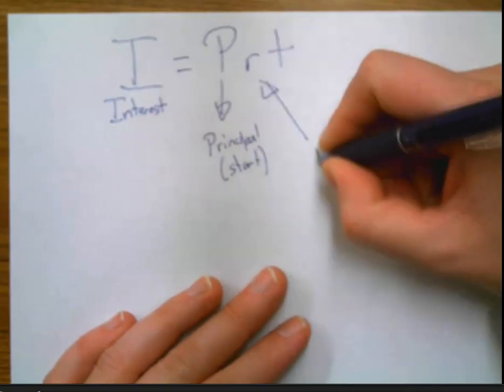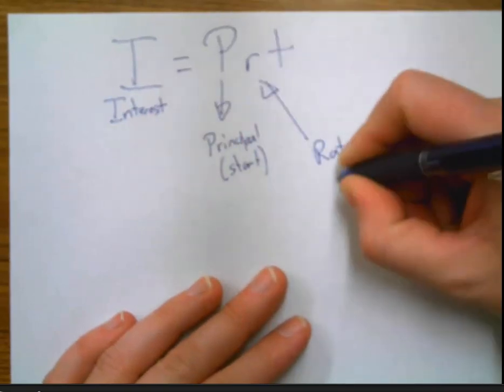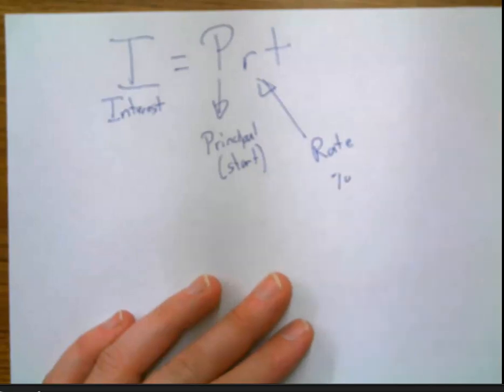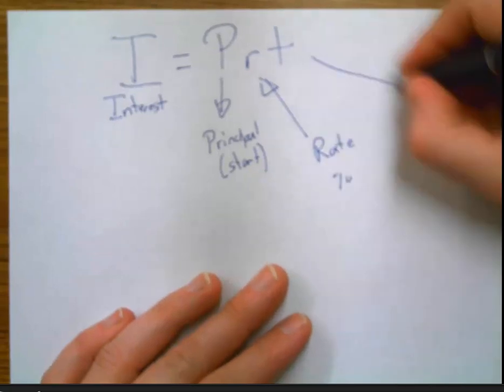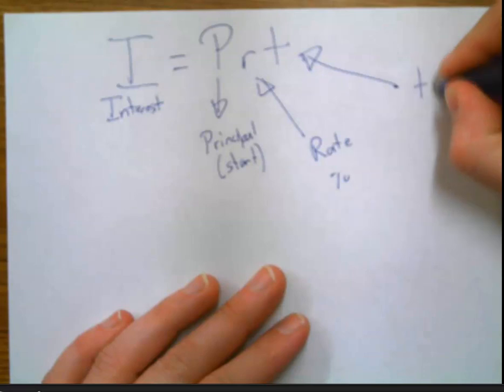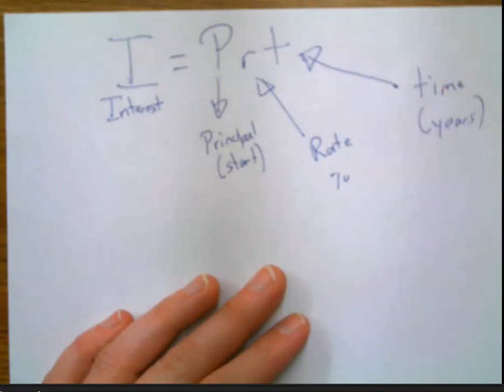R is the rate. That is your percent, but it goes into the formula as a decimal. And T stands for time. It's usually in years, although they can, if they really want to be tricky, say months.